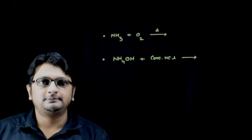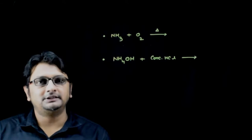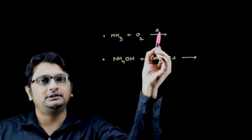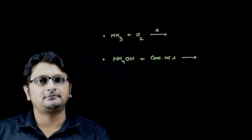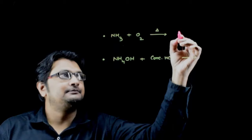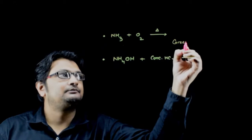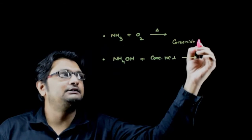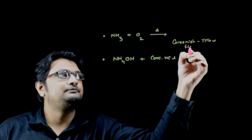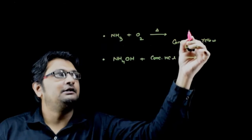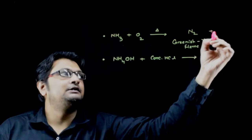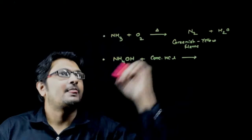Welcome back students. In this question, I will tell you when ammonia gas is heated with oxygen, we will see a greenish yellow flame forming due to the formation of nitrogen gas along with water vapor.